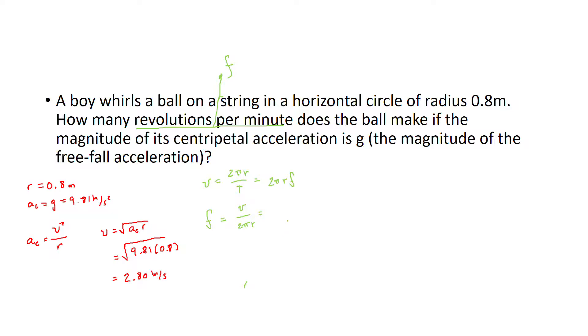That's going to be 2.80 over 2 times pi times 0.8. Let me recalculate that: 2.80 over 2 pi times 0.8, which equals 0.55.